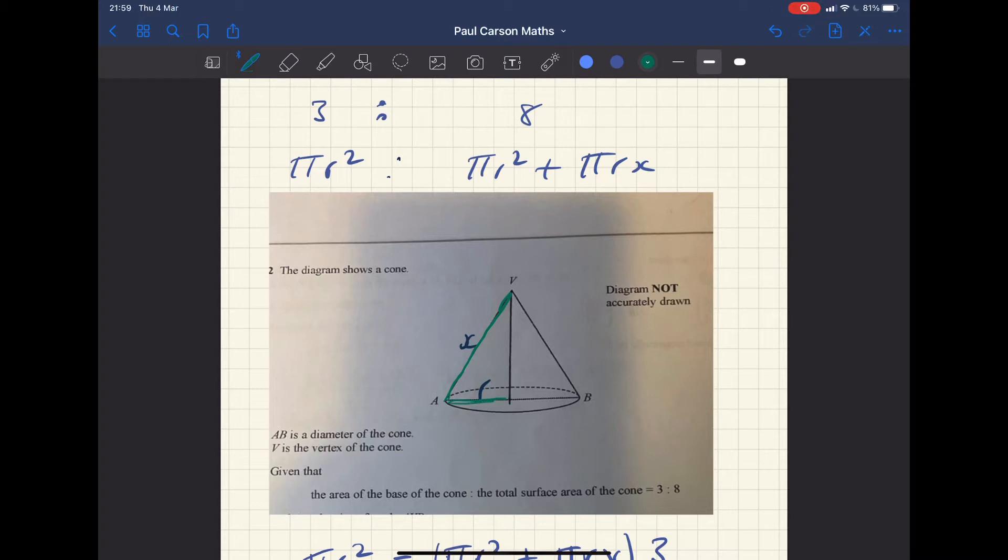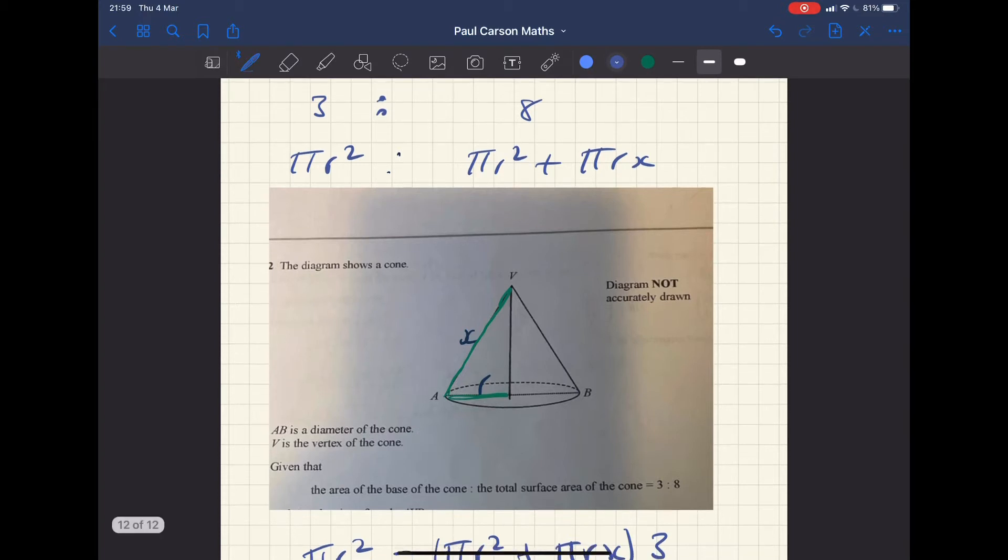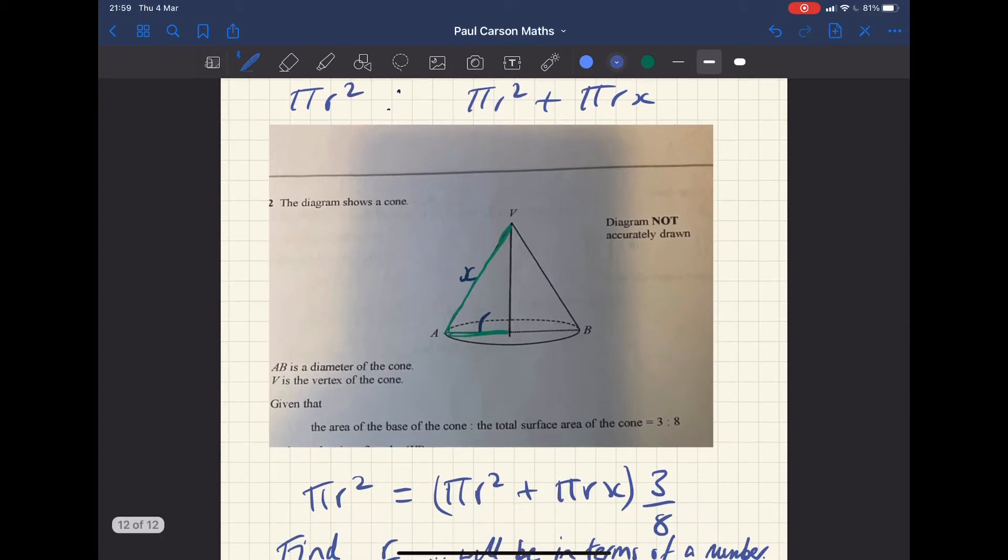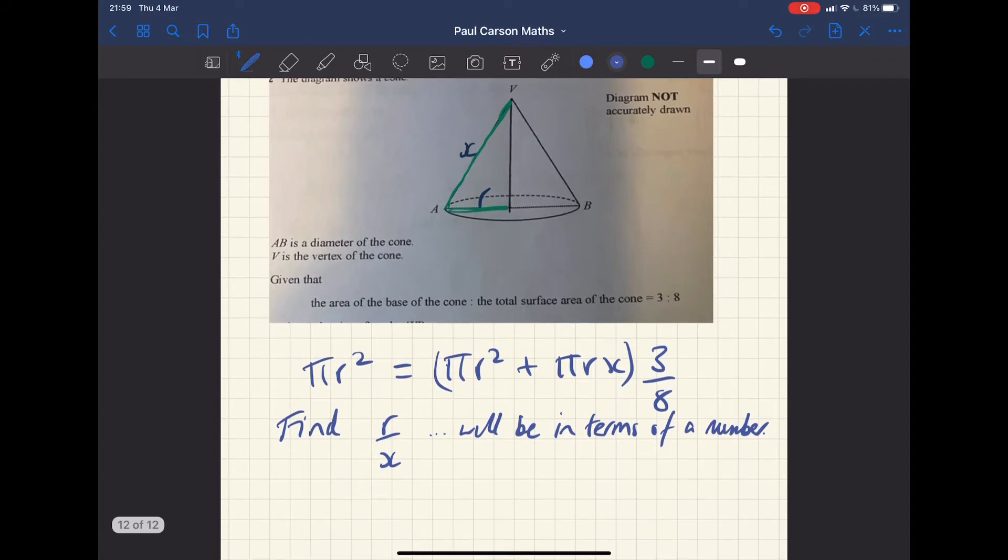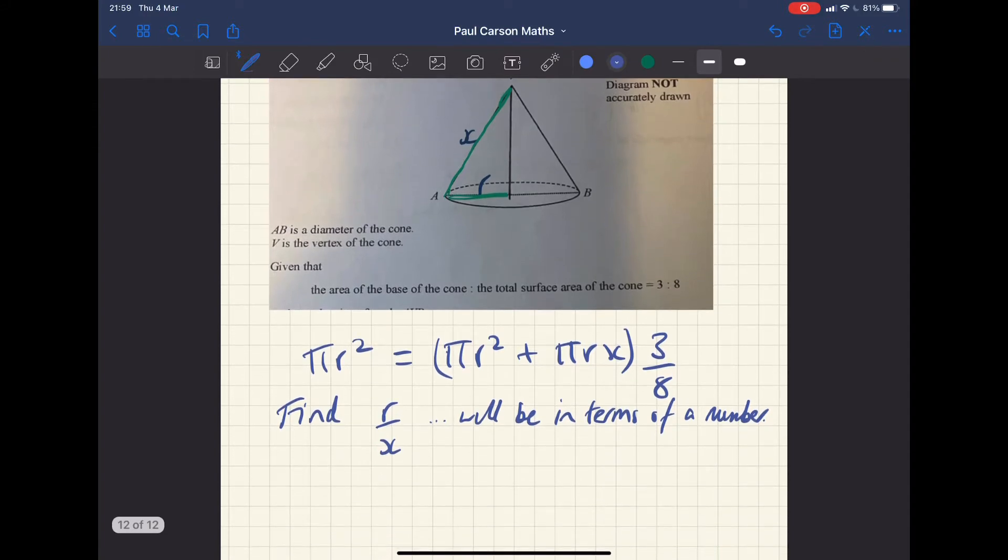You'll see why later, which is a lot easier just to use one letter. So there we go. So that's the first thing. Next up it says the area of the base of the cone and the ratio of the two is three to eight. So πr² and then πr² + πrx.